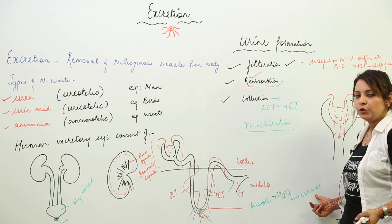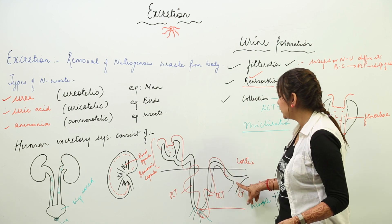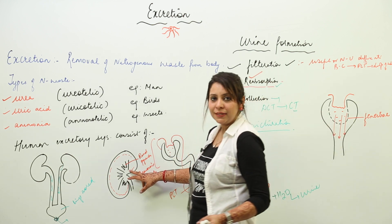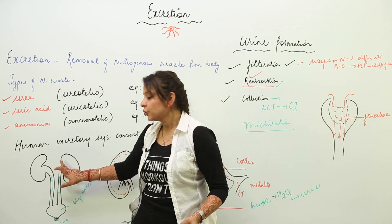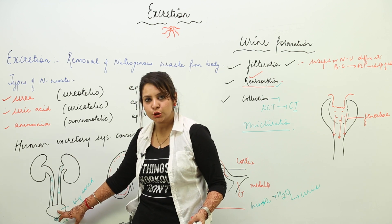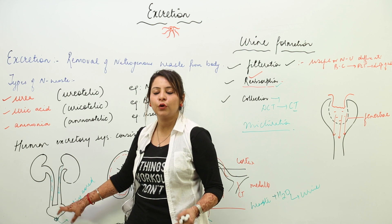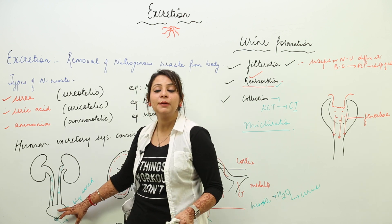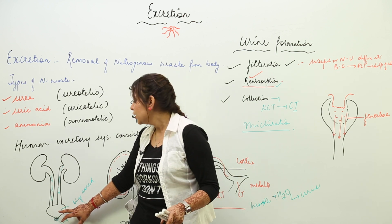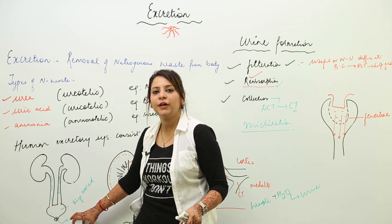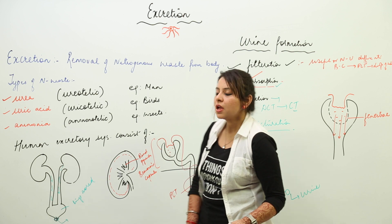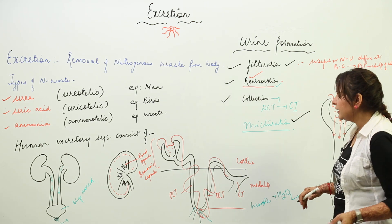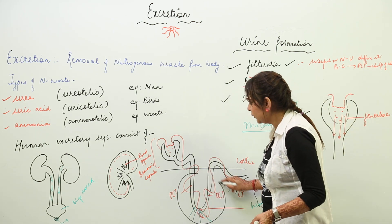In collection, urine passes from the DCT to the collecting tubules (CT). Small CTs of different nephrons unite to form bigger ones, which form the renal pyramids, and pour their secretion into the ureter. Through the ureter it reaches the urinary bladder where it is temporarily stored, then excreted through the urethra by voluntary or involuntary action. The passing of urine is termed micturation.